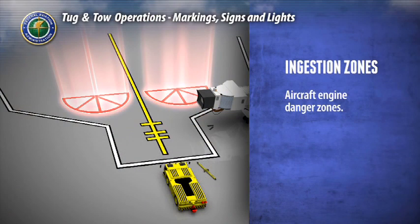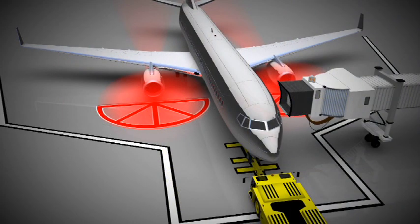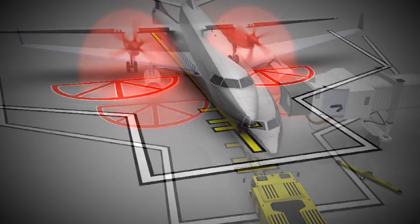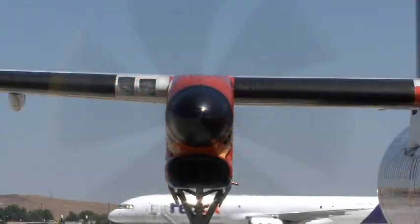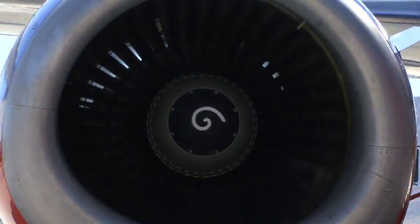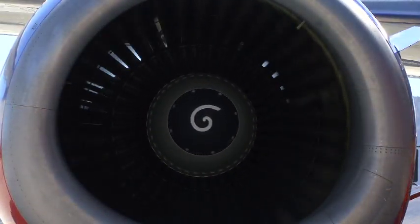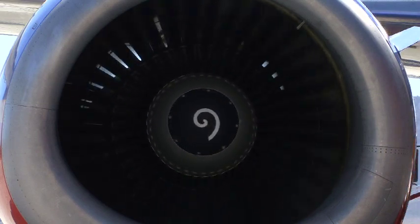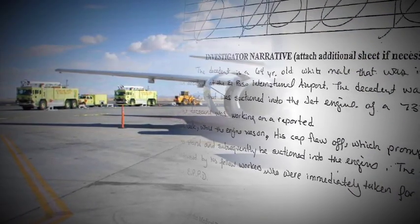Aircraft engine ingestion zones are indicated by red slashed half circles which represent the front of the engine's intakes or propellers. This is an extremely dangerous area when the aircraft engines are running. Extreme caution and awareness are necessary when an aircraft engine is running even at idle. The consequences of entering this area can be deadly.